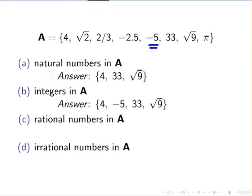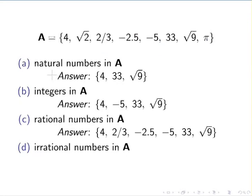For rational numbers, we include everything that can be expressed as a ratio of two integers, or one integer divided by another. As well as all the integers included previously, we add two thirds, which is clearly a fraction, and also minus 2.5, which can be written as minus 5 over 2. These two numbers are added to the integers to form the set of rational numbers.